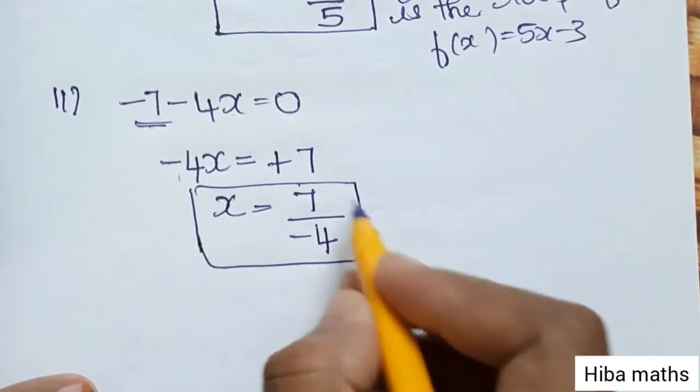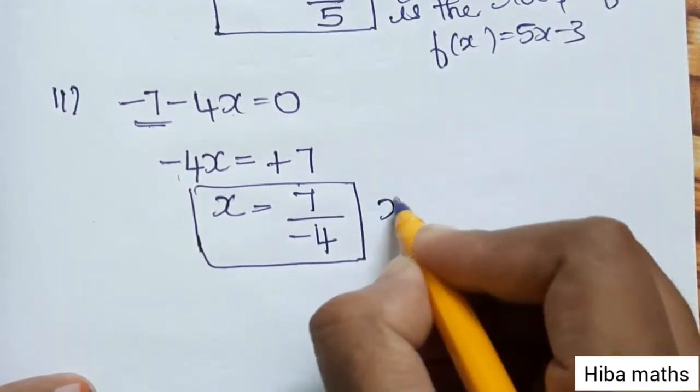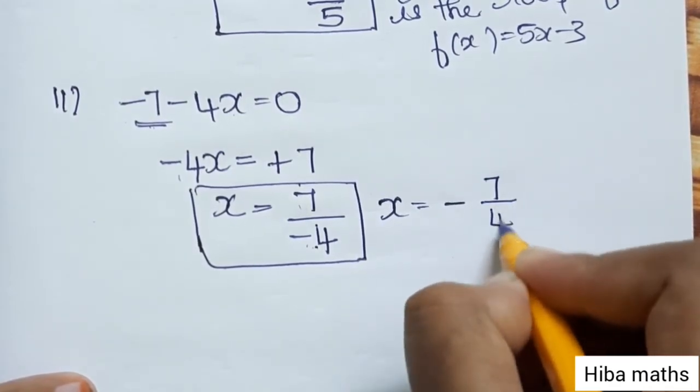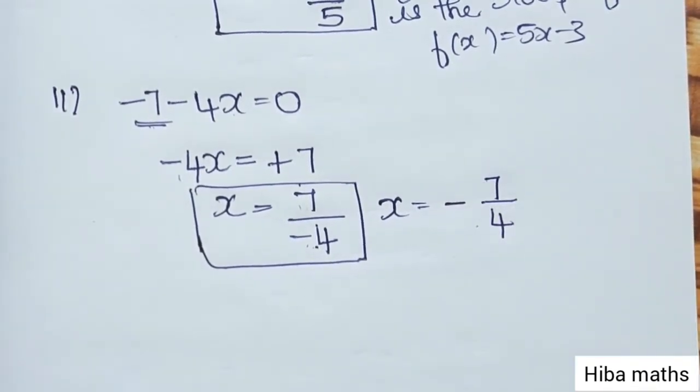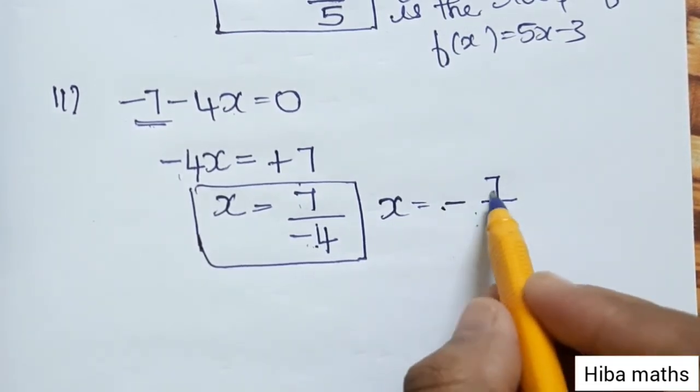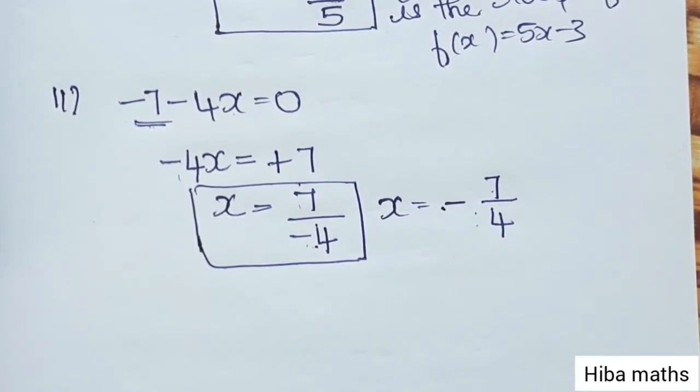If you have confusion about the minus sign, you can write it as minus 7/4 or -7/4. Thank you so much for watching.